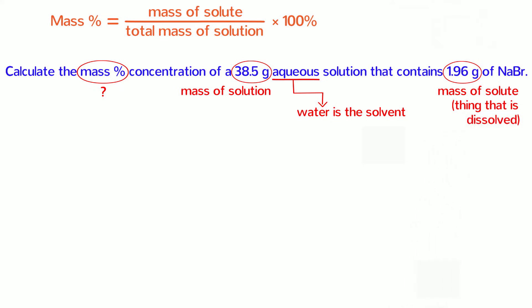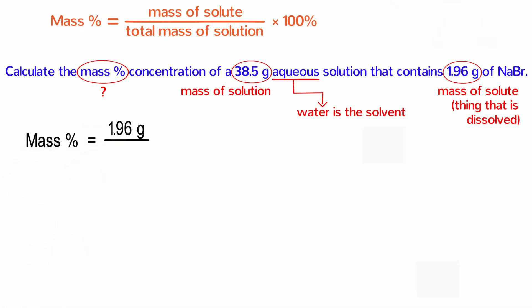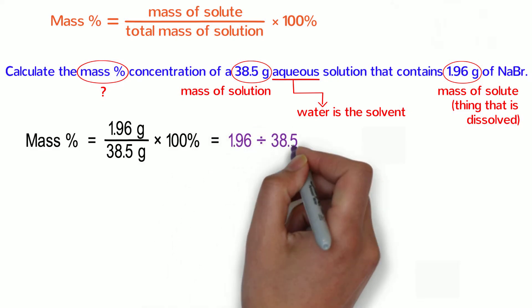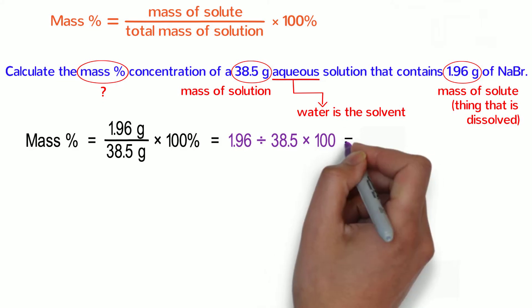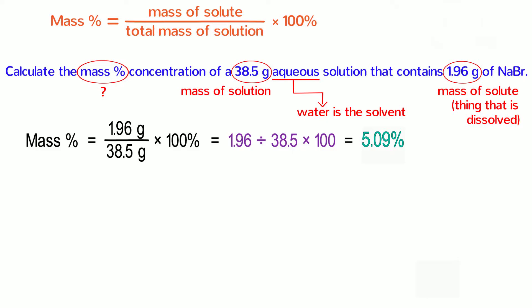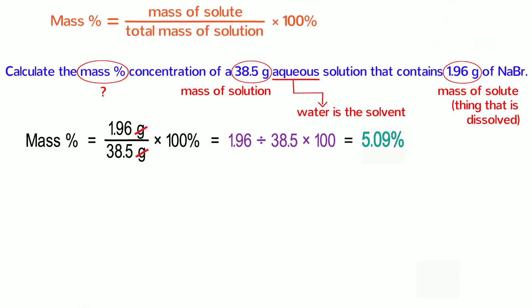Now we are ready to plug in some numbers to calculate the mass percent. 1.96 grams goes on the top of the fraction and 38.5 grams goes on the bottom of the fraction. This fraction is then multiplied by 100%. In your calculator, type 1.96 divided by 38.5 times 100, which gives us the answer of 5.09%. As for the units, notice that the grams on the top and bottom of the fraction cancel each other out.